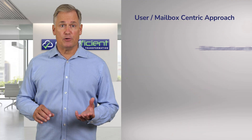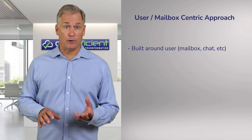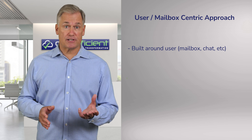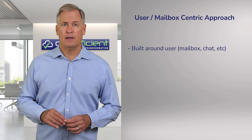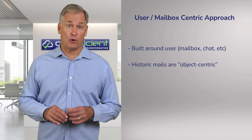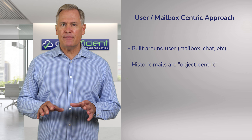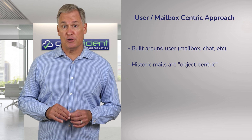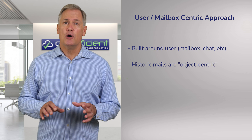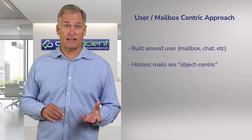Microsoft Purview is built around the notion of a user — a person that owns a mailbox, chats on Teams, or shares a file using OneDrive. On the other hand, historic email journals are rather object-centric. So even if a mail has been sent to a large distribution list or copied an entire department, only a single corporate copy of that email would exist.